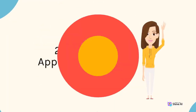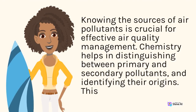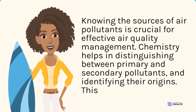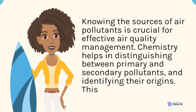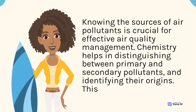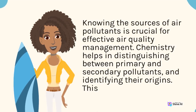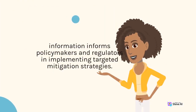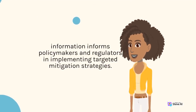2. Source Apportionment. Knowing the sources of air pollutants is crucial for effective air quality management. Chemistry helps in distinguishing between primary and secondary pollutants and identifying their origins. This information informs policy makers and regulators in implementing targeted mitigation strategies.